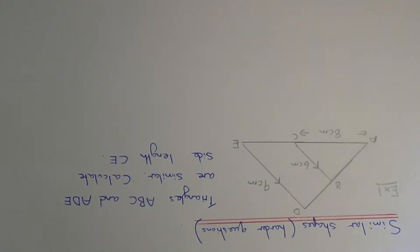Today I want to show you a harder similar shape question where the two similar shapes are hidden within a larger shape. So let's have a look at our little example here.